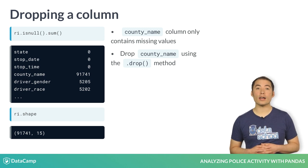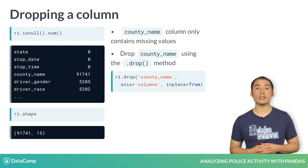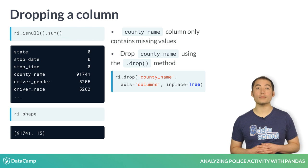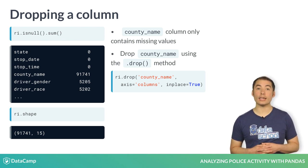Besides specifying the column name, you need to specify that you're dropping from the columns axis, and that you want the operation to occur in place, which avoids an assignment statement.